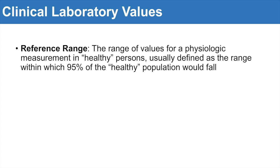So to begin, what is a reference range? A reference range is a range of values for a physiologic measurement in healthy persons, usually defined as the range within which 95% of the healthy population would fall. They look at an entire population of healthy individuals, find the average of those values, then look at two standard deviations less than and more than the average — that's about 95% of the range of values. That's how they determine a reference range.